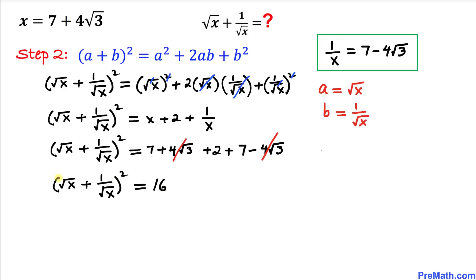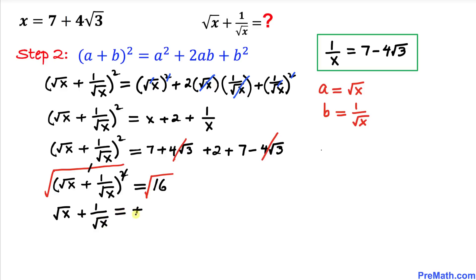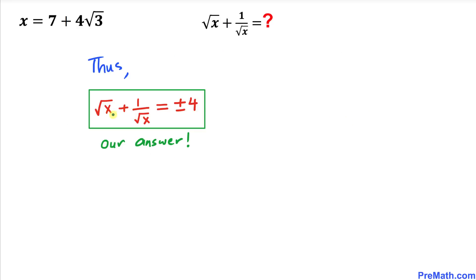Let's undo this square by taking the square root on both sides. The square and square root cancel on the left-hand side. So we simply get square root of x plus 1 divided by square root of x equals the square root of 16 on the right-hand side, which is positive or negative 4. Thus our answer is positive or negative 4.